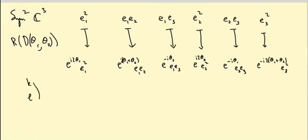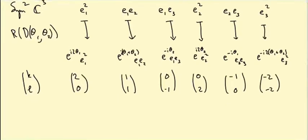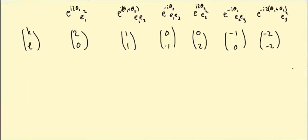So the (K,L) weight vectors are: E₁² gives (2,0), E₁E₂ gives (1,1), E₁E₃ gives (0,-1), E₂² gives (0,2), E₂E₃ gives (-1,0), and E₃² gives (-2,-2). Let's draw those in the lattice of weights.